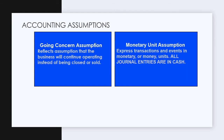The next assumption is the monetary unit assumption, where everything we measure is going to be in dollars, which makes sense from a business perspective. At the end of the day, the real objective of a business is to make money. There are other social benefits which are important and great, but from a true accounting capitalist perspective, the whole goal is to make money, so everything is going to be measured in money. We're not going to measure journal entries in time, in units, or anything. Everything is measured in cash, in the financial statements and in the journal entries.